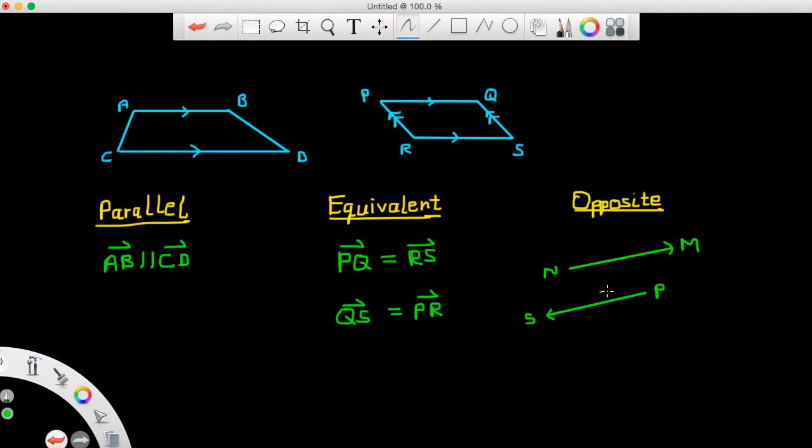And SP is facing the southwest direction. So in this case, the vectors NM and PS are opposite. So mathematically you can write them as such.